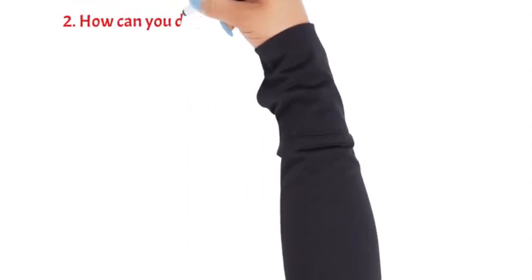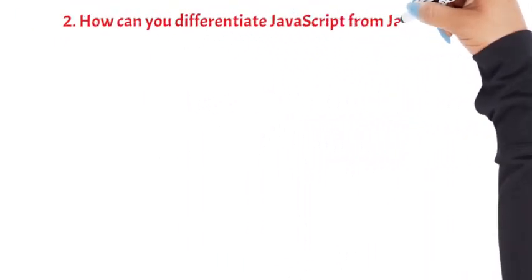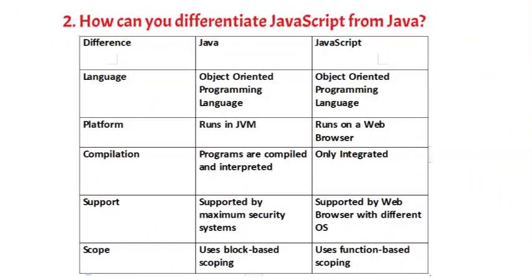Question 2: How can you differentiate JavaScript from Java? 1. Language — both are object-oriented programming languages.